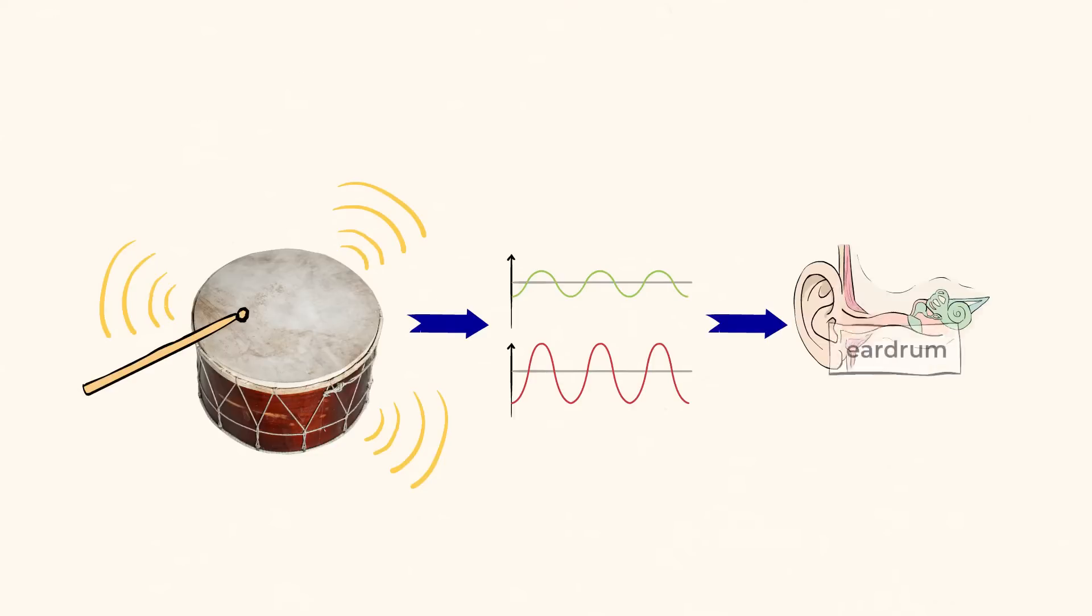When the drum is struck, its surface vibrates. That sends waves of vibrations through the air, which then travel into our ears.